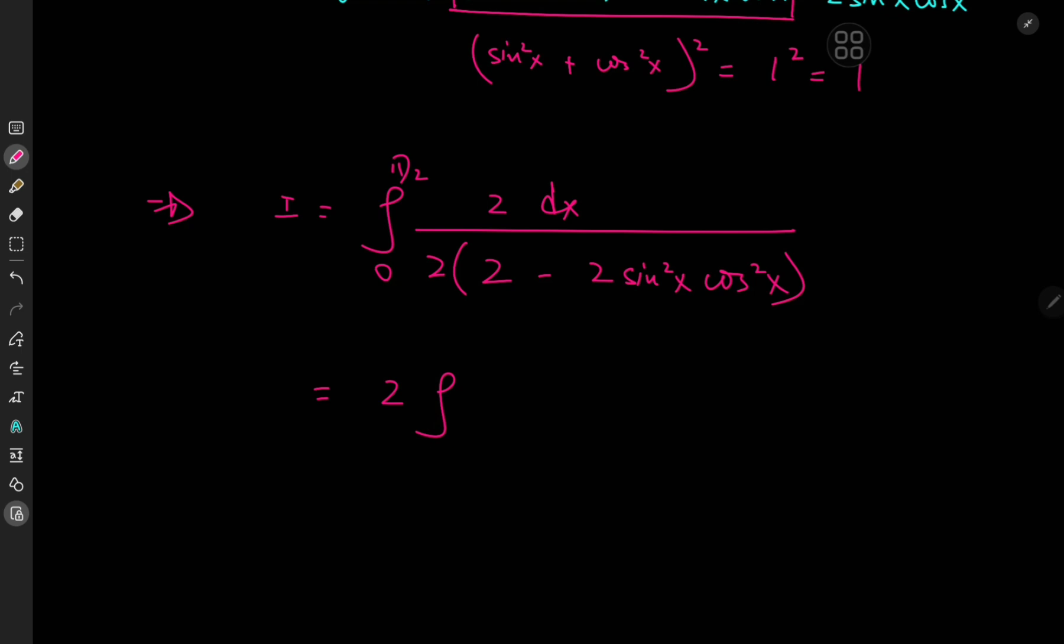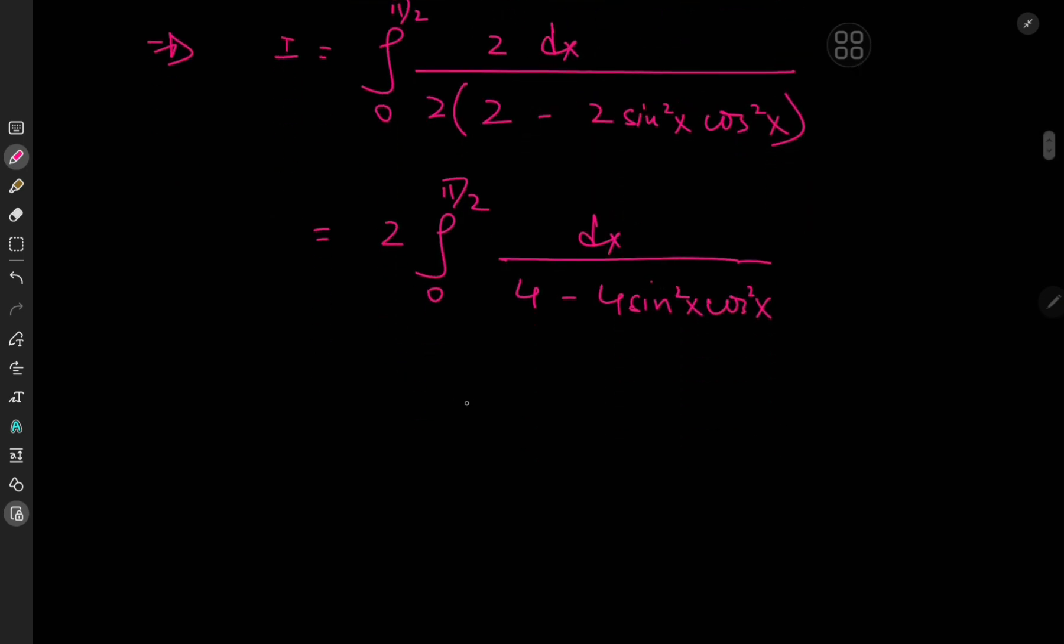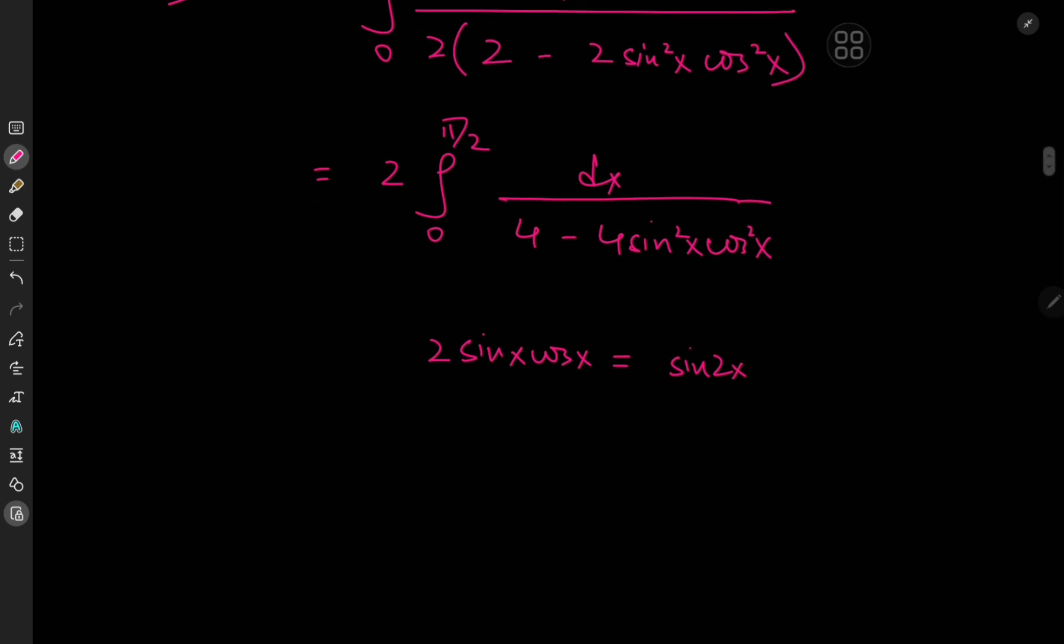Let me just expand by 2 upstairs and downstairs. So that means we have twice the integral from 0 to pi by 2 of dx divided by 4 minus 4 times sine square x times cosine square x. We know that sine x cosine x times 2 equals sine 2x. So what we have in the denominator is just sine square 2x.